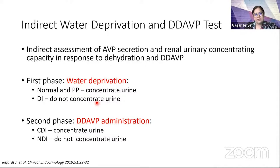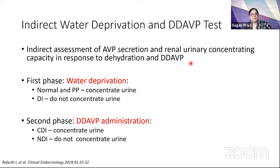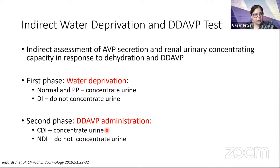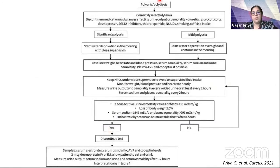In cases where diagnosis is not clear-cut on baseline investigations, we proceed with the indirect water deprivation test, indirectly assessing AVP secretion and its action at the kidney in response to dehydration and desmopressin administration. In the first phase of water deprivation, normal individuals or those with primary polydipsia concentrate urine, while those with DI do not. In the second phase after desmopressin, central DI patients respond by concentrating urine, while nephrogenic DI patients do not. Pre-test protocols include correcting electrolyte abnormalities and stopping relevant medications, caffeine, and smoking at least 24 hours prior.